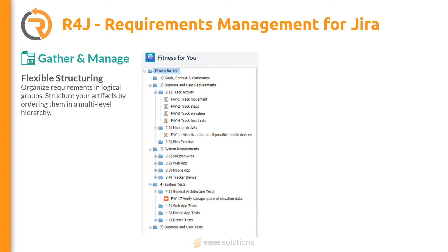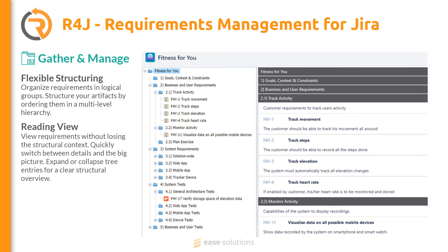A flexible parent-child setup is also possible. The Jira table and detail view isn't the best when you need a full view into your product, component, or customer requirements document. R4j supports you with a so-called reading view. Using the tree structure as a base, it lists the issue details just as easily as in a Word document.